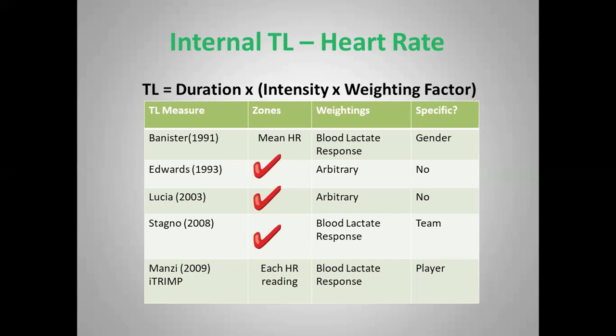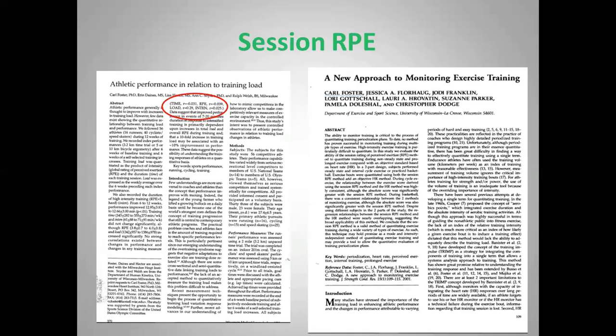In 2009, Vincenzo Manzi and colleagues published papers using the iTRIMP — the individualized TRIMP method — where zones were non-existent in the sense that each heart rate reading was effectively a zone, and the blood lactate response was individual to the player. This is the most individualized of all the methods.